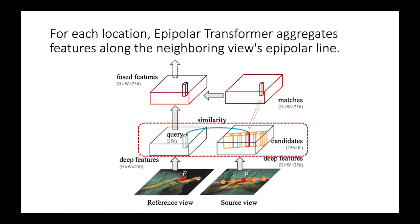Given an intermediate feature in the reference view, its corresponding neighboring view feature is computed by doing feature matching along the epipolar line, followed by a soft argmax.